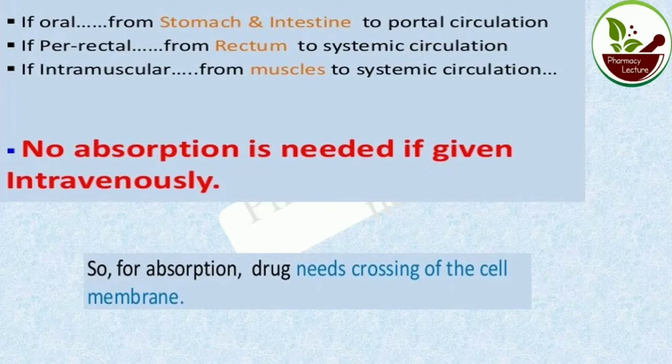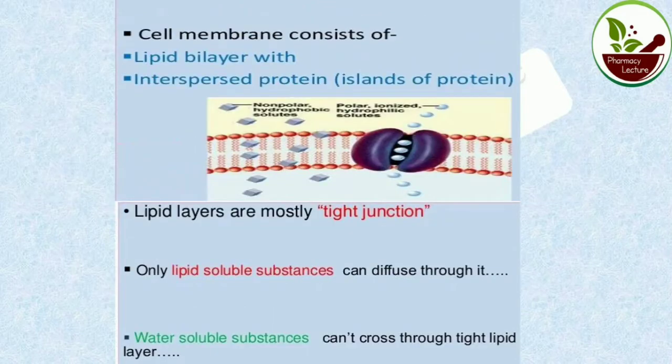The cell membrane is involved in drug absorption. As covered in anatomy, the components of a cell are the cell membrane, cytoplasm, and nucleus. The cell membrane is made up of phospholipid — that means a lipid bilayer — with interspersed proteins. The lipid bilayer forms mostly tight junctions.